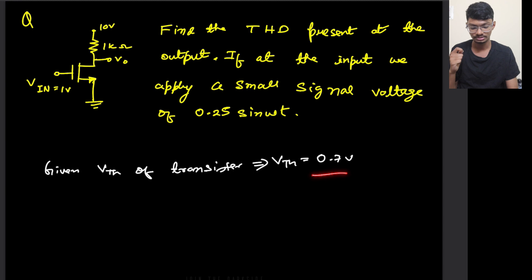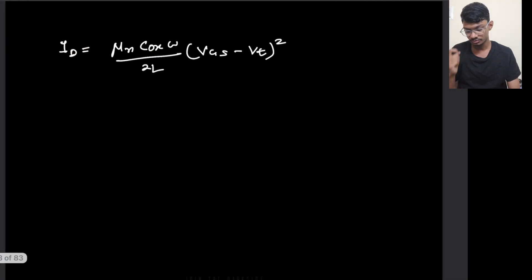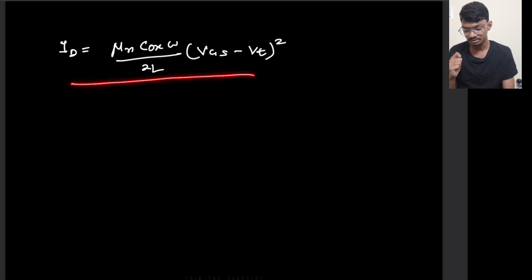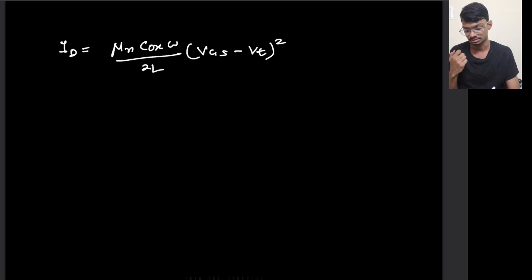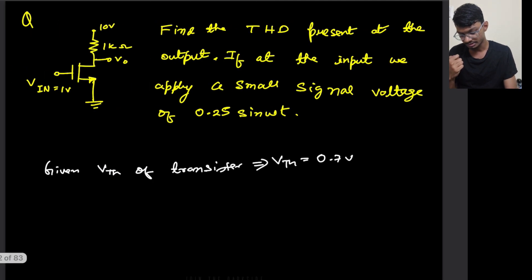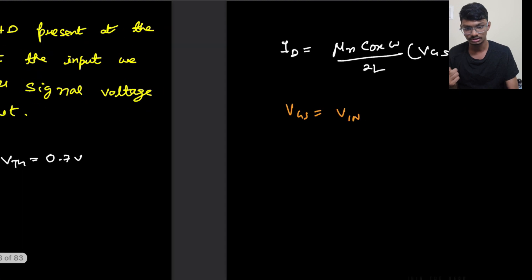The threshold voltage is 0.7 volts for this MOSFET. To proceed, we need the current equation for the MOSFET in the saturation region, which is: I_D = (μn·Cox·W) / (2L) · (V_GS − V_T)². In our case, V_GS is basically V_in, since the source is grounded.